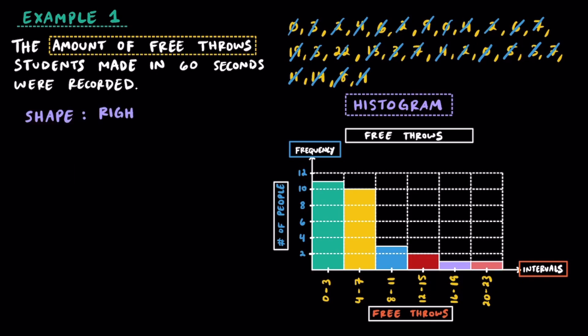Looking at the shape of distribution here, we can see that we have a right skewed shape. Most students weren't able to make many free throws, which is why most of their data is on the left side.